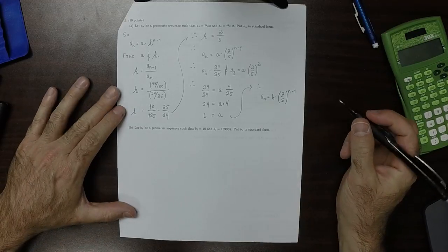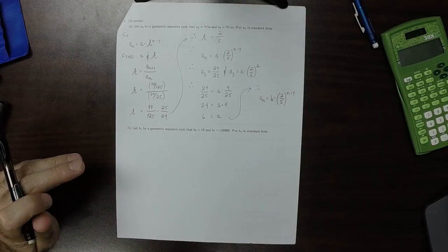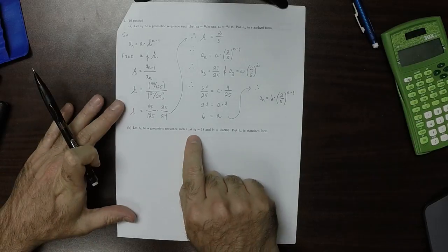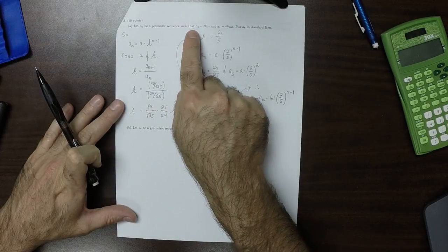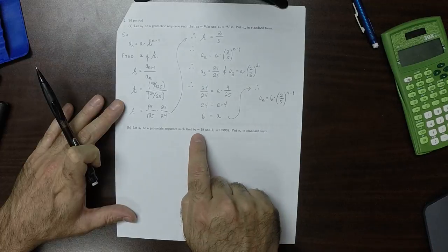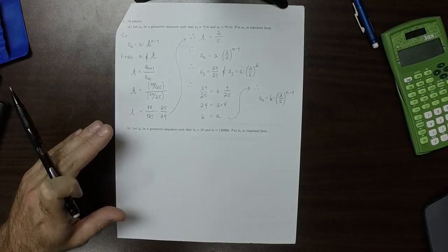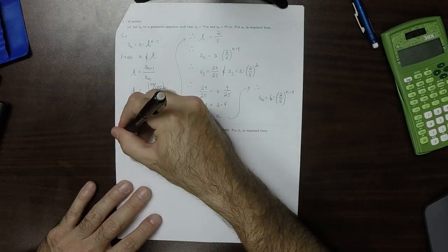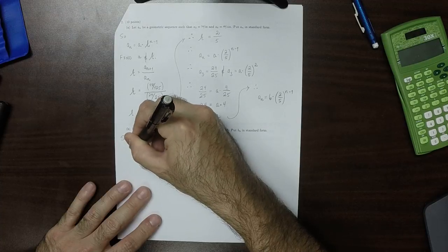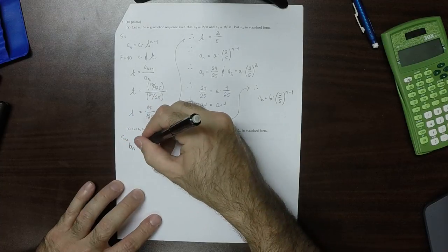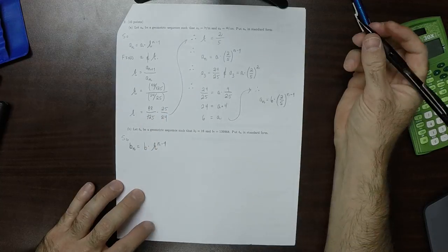For part b, it's quite similar to part a. However, we're not given consecutive terms. In part a, we were given a₃ and a₄, consecutive terms. Here, we're not given consecutive terms. We're given b₂ and b₇. However, the mechanics are, nevertheless, quite similar. So bₙ must be equal to some b multiplied by r to the power n minus 1.